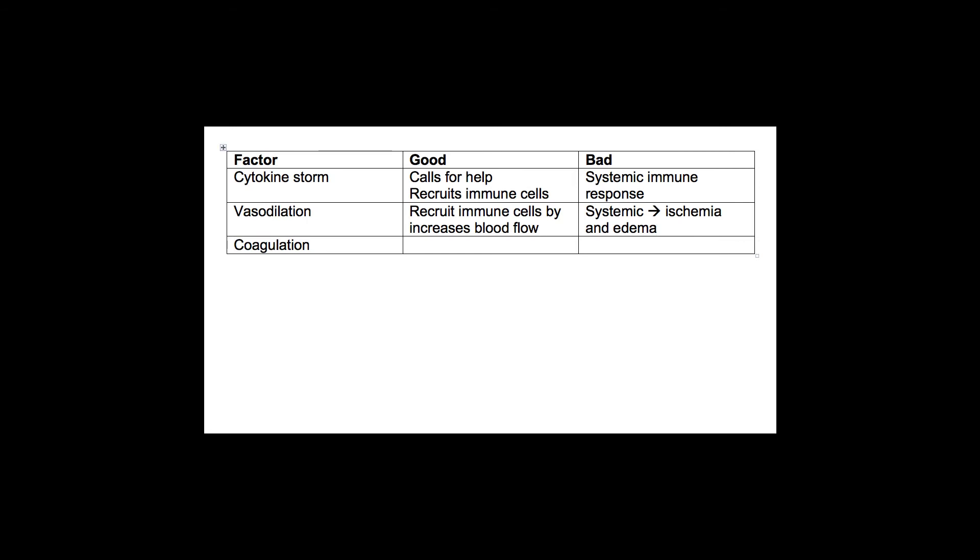You get a similar thing. Just like the vasodilation is essentially trying to enable the flow of blood cells to an area of inflammation, coagulation does the opposite where it says, let me just isolate this area of tissue damage. If there's a gangrenous toe, let's chop it off. It essentially is doing the same thing. It's causing coagulation around the site of injury. The problem is that if that's not local and it's systemic, then you can get ischemia from clots, which is called disseminated intravascular coagulation.